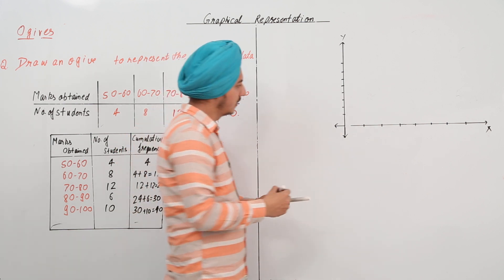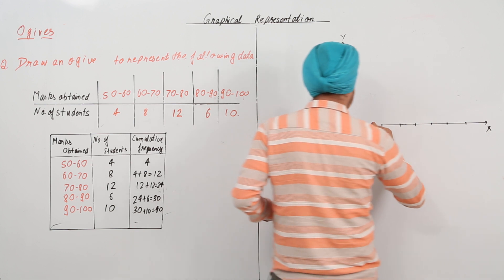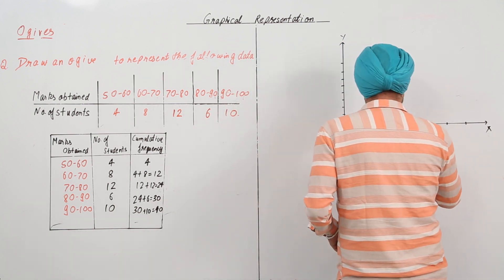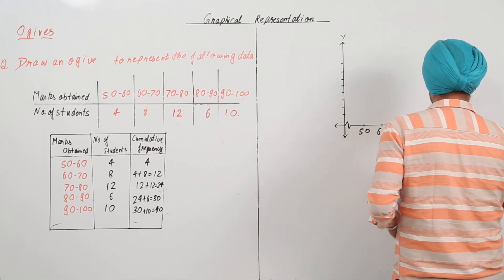So, we can mark this sign which means that this graph is continued and mark this as 50. Start the marking from here. This is 60, 70, 80, 90 and 100.